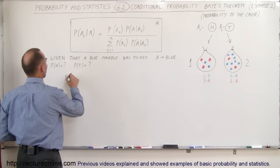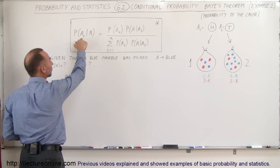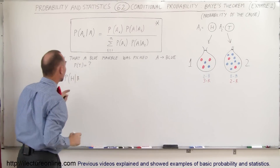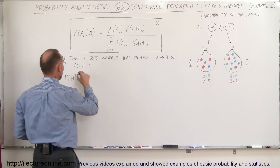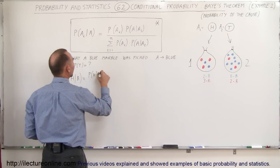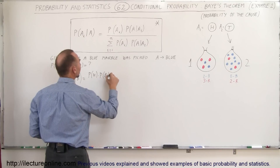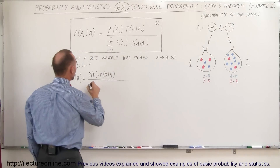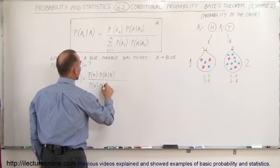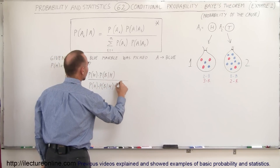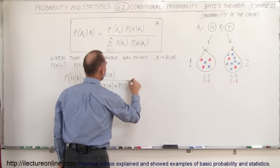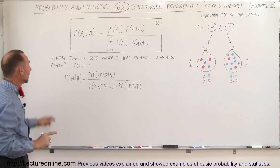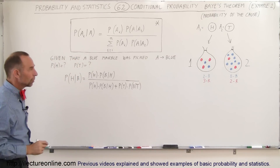So the probability of heads — A1 is heads — the probability that we threw heads provided that we picked a blue marble, where event A is a blue marble, equals the probability that we threw heads times the probability that we picked a blue marble provided we tossed heads, divided by the sum of all possibilities: the probability of heads times the probability of blue given heads, plus the probability of tails times the probability of blue given tails.